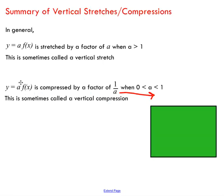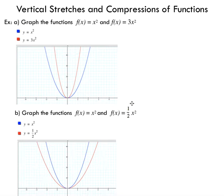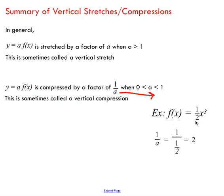If we have some general function and we're multiplying by a, but this time our a value is between 0 and 1, then we say it's a compression by a factor of 1 over a. This usually confuses people. If a is a fraction — for instance, 1/2 — we would take 1 over 1/2, flip the fraction and multiply, and end up with 2. So we would say that this is a vertical compression by a factor of 2. Just take your fraction, flip it, and that tells you what you're compressing by.